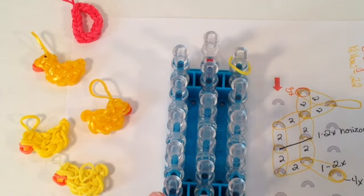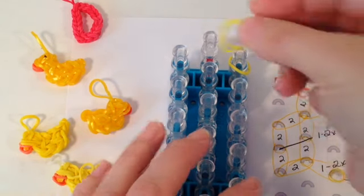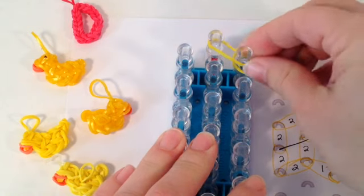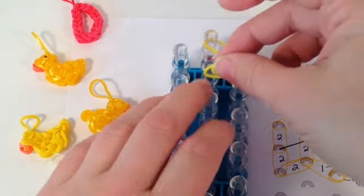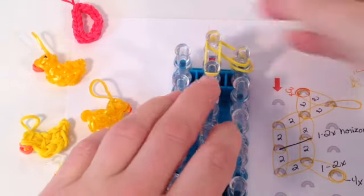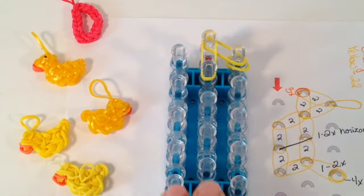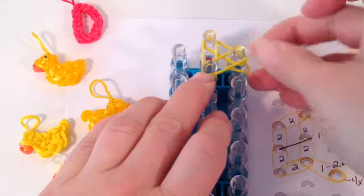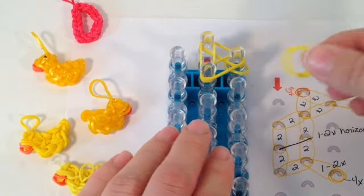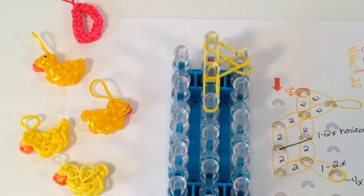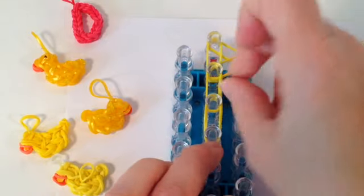So we have our dangle band. We're going to take two bands, place it from the center to the right, two additional bands coming right down the center, two bands connecting the center and the right peg to form a triangle, two bands coming straight down the center, two additional bands coming straight down the center.